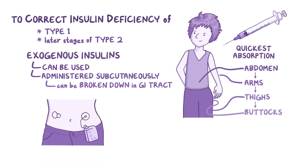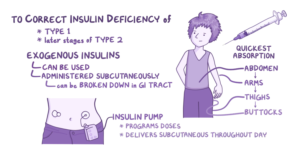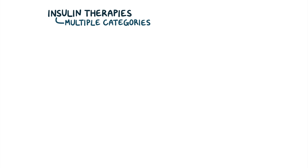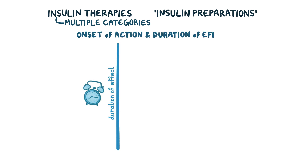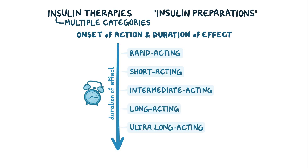Some diabetics prefer the insulin pump since insulin dosages are programmed into the device and will be delivered subcutaneously throughout the day, thus preventing the need for multiple daily insulin injections. There are multiple categories of insulin therapies, more commonly referred to as insulin preparations. These preparations are categorized according to their onset of action and duration of effect, and they include rapid-acting, short-acting, intermediate-acting, long-acting, and ultra-long-acting insulins.